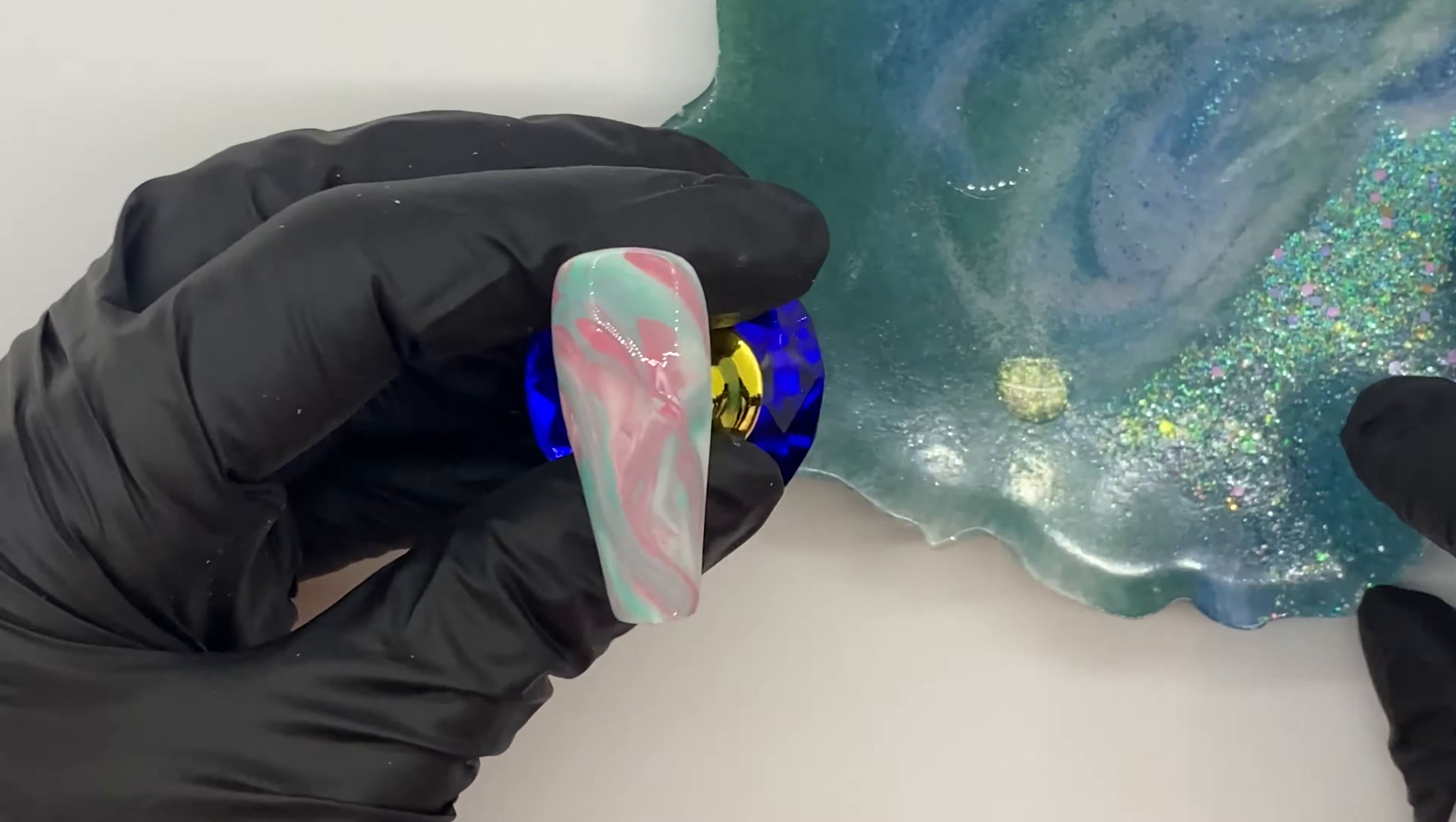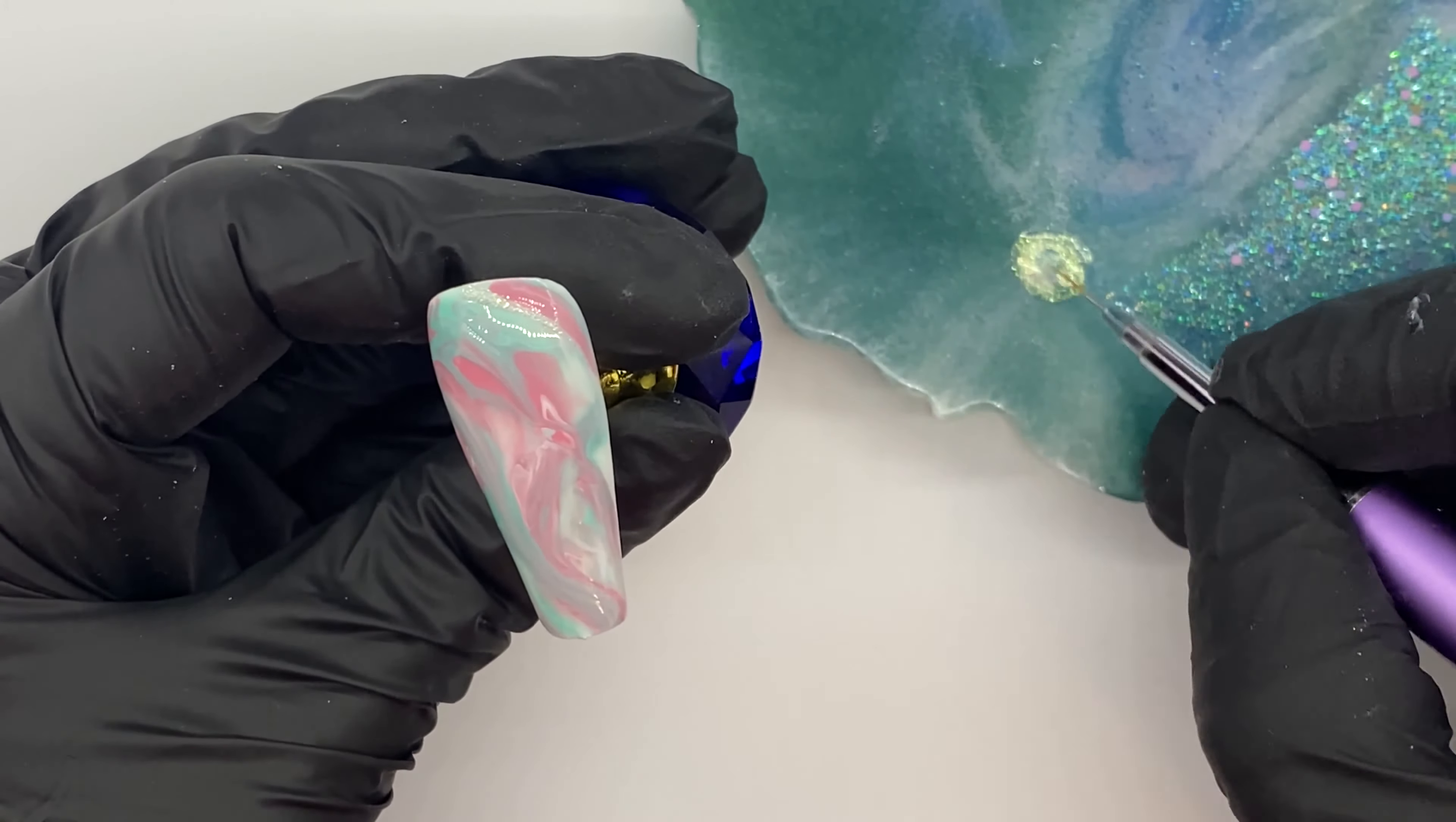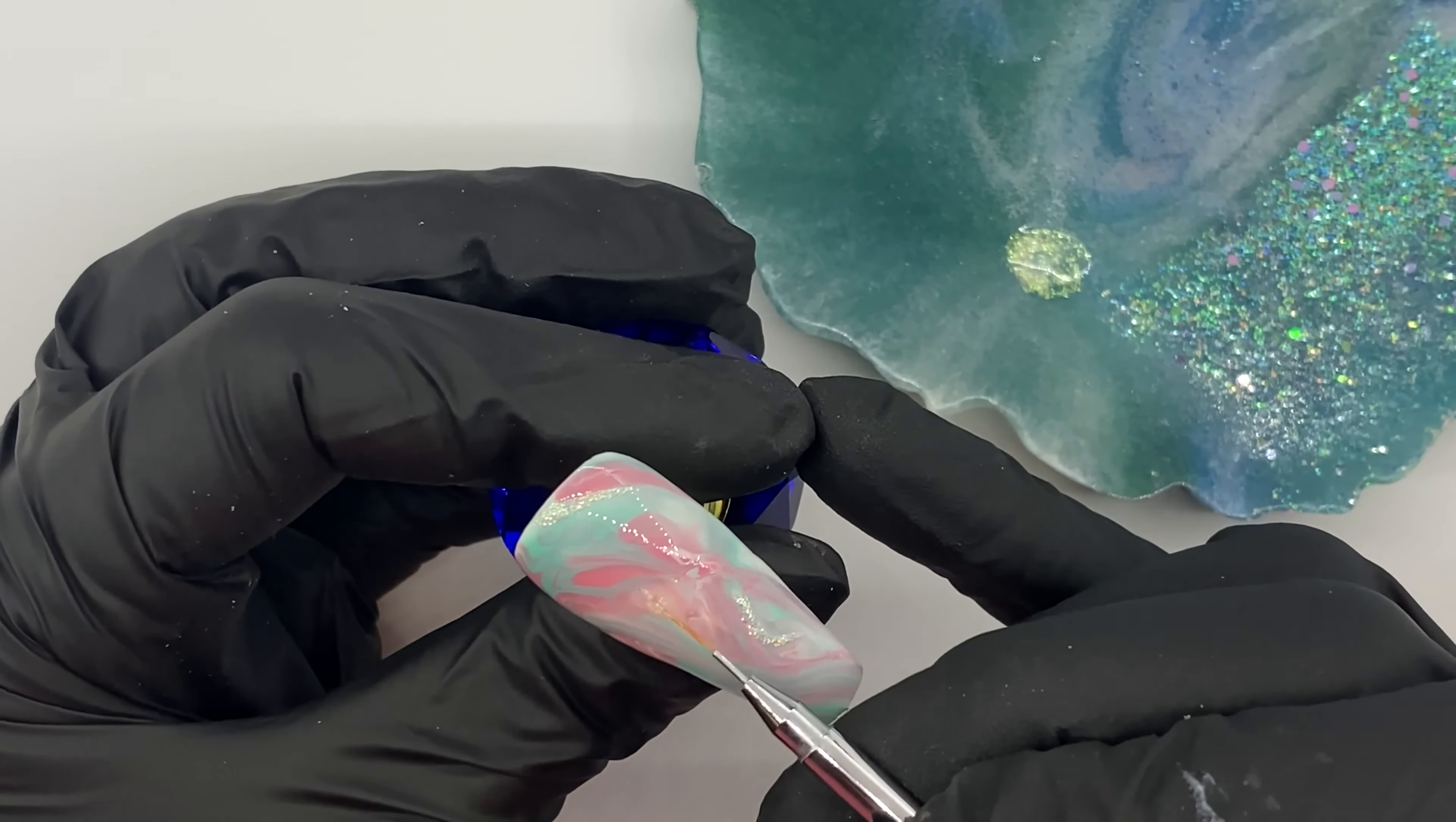Once you're happy with your marble, just pop that in for a cure. Next I've got some Premier Gel glittery gel polish - I think it's called Unicorn - and I'm just adding little lines where I'd like the glitter to show.